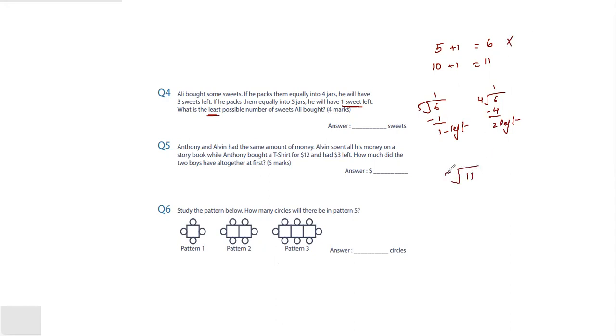Now we try this with 11. So 5 twos are 10, I have 1 left as the remainder. If you do this with 4, 4 twos are 8, so I have 3 left. That is what the question is saying. If you pack them equally into 4 jars, he'll have 3 sweets left. If he packs them into 5, then he'll have 1 sweet left. So the minimum or least possible number of sweets he should have bought is 11.